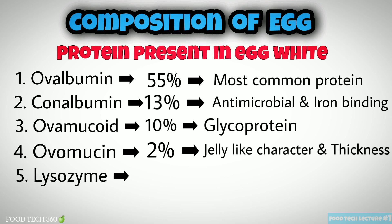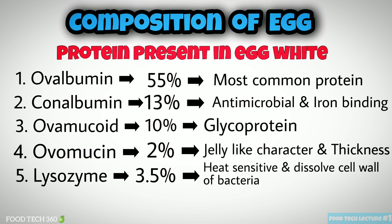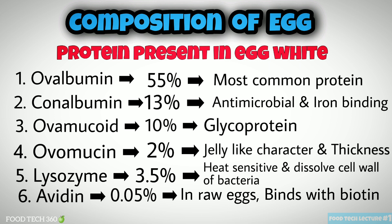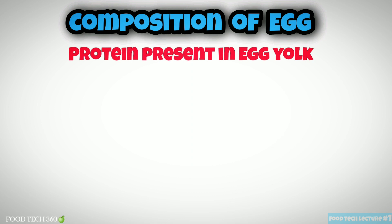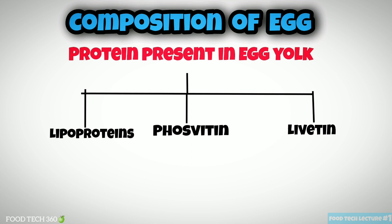Ovomucin: 2% of egg white protein; it is responsible for the jelly-like character and thickness of the albumin. Lysozyme: 3.5%; it is heat sensitive and contains an enzyme capable of dissolving the cell wall of bacteria. Avidin: 0.05%; in raw eggs it binds with biotin and makes this vitamin unavailable. Flavoprotein: 0.8%; it binds with riboflavin.